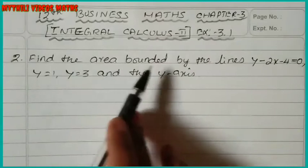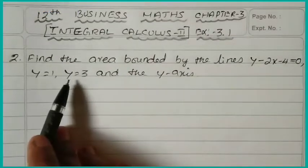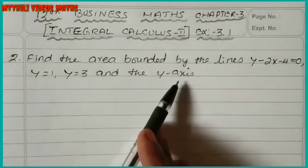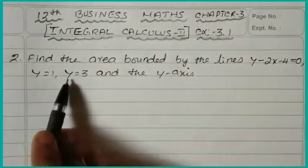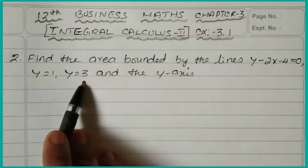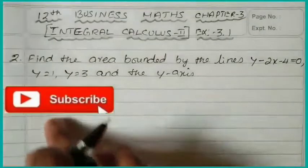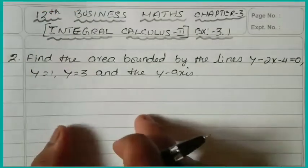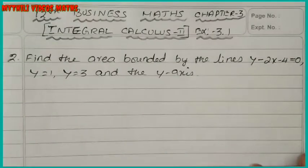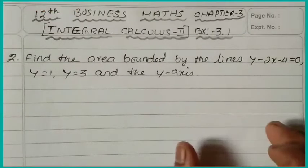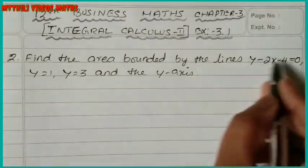Find the area bounded by the lines y minus 2x minus 4 equal to 0, then y equal to 1, y equal to 3, and the y-axis. First we have to find the table of values, and using that table we have to draw the graph to identify which bounded region we need to find.